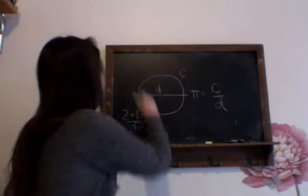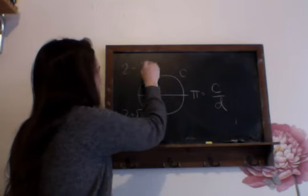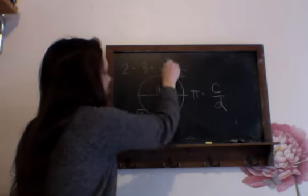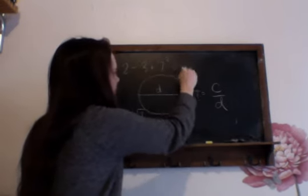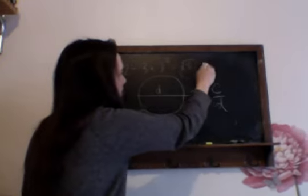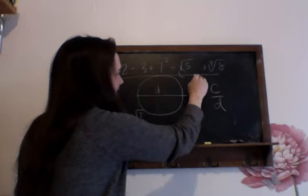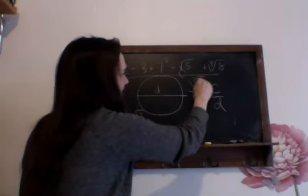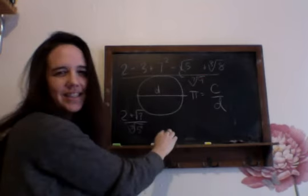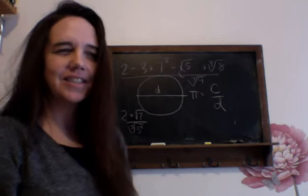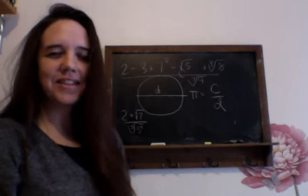Or I can write down 2 minus 3 plus 7 squared minus the square root of 5 plus the cube root of 8 over the 7th root of 9. Anything I can write down like that with the square root, plus, minus, times, then that's algebraic.